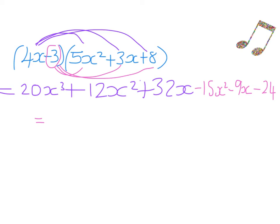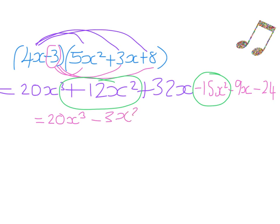Now simplifying: 20x cubed. For the x squared terms, we have 12x squared and take away 15 — starting at positive 12 and taking away 15 gives negative 3x squared. For the x terms, starting at positive 32 and taking away 9 gives plus 23x. And then take away 24 gives minus 24.